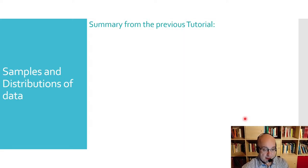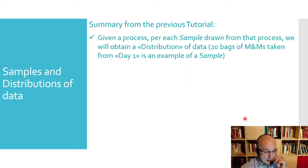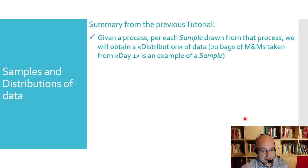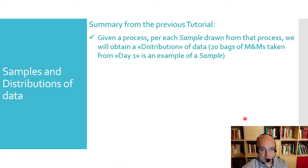Let's start with a summary from our previous tutorial, where we saw that given a process, for each sample drawn from that process we are able to obtain a distribution of data. The example from the previous tutorial was related to 20 bags of M&Ms sampled from production day number one at M&Ms Corporation. Each bag contains a number of M&Ms, and if we count the M&Ms in each bag and plot the distribution of data, this is an example of a sample drawn from a process.